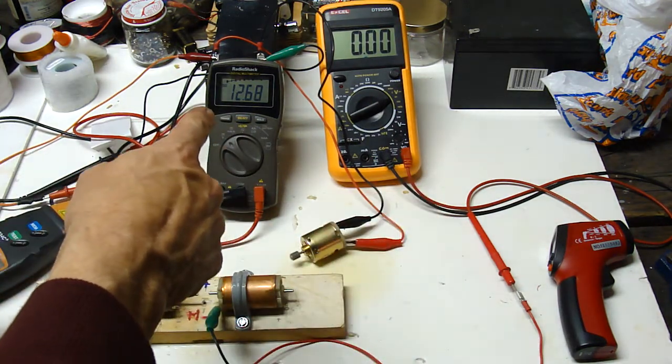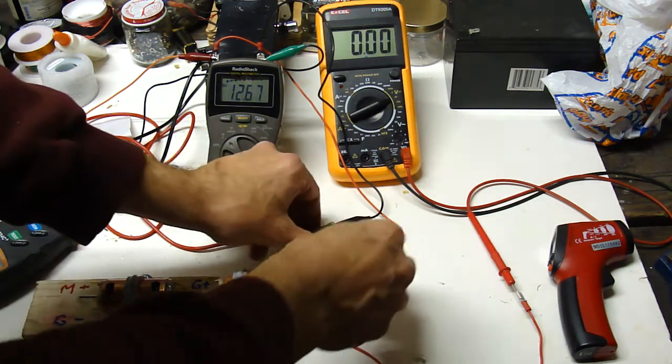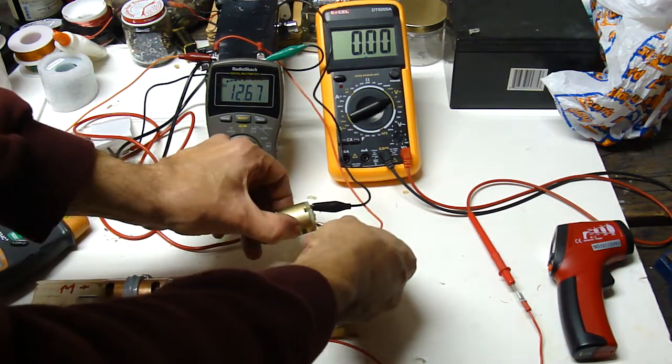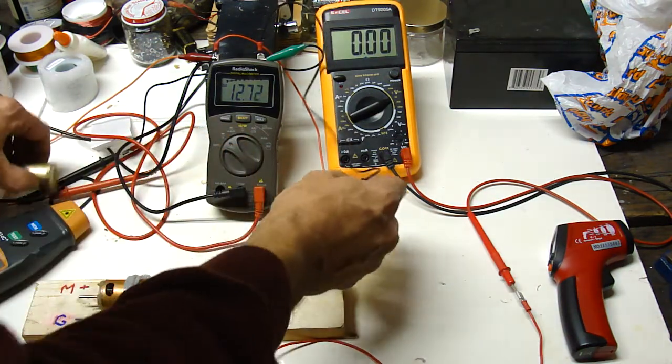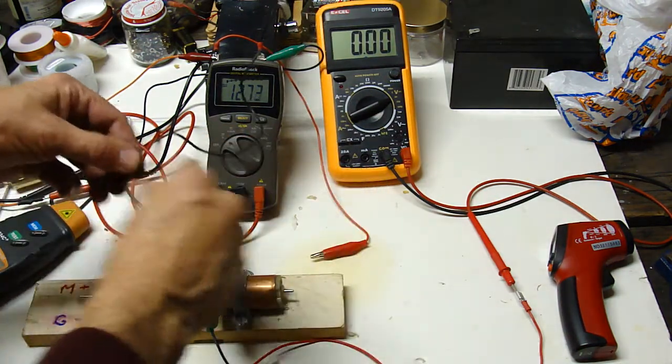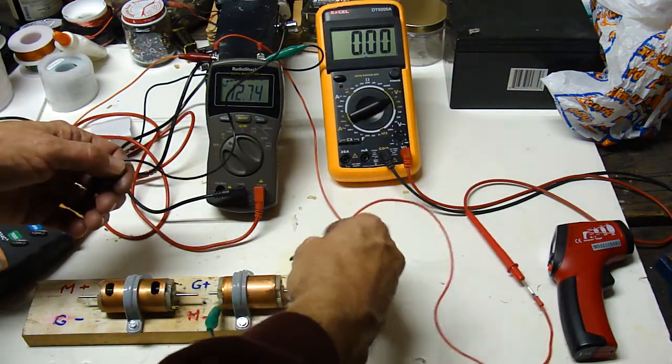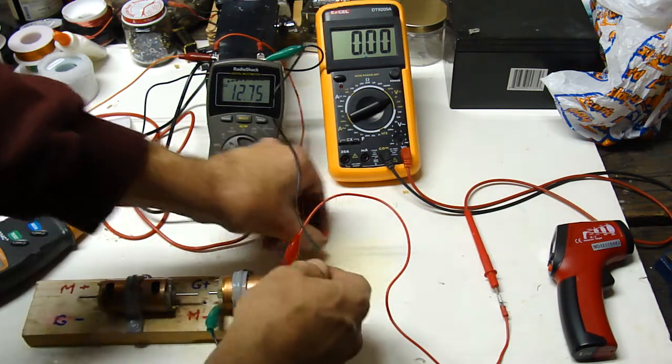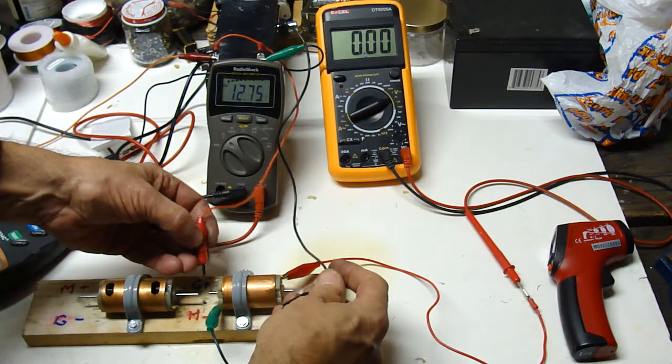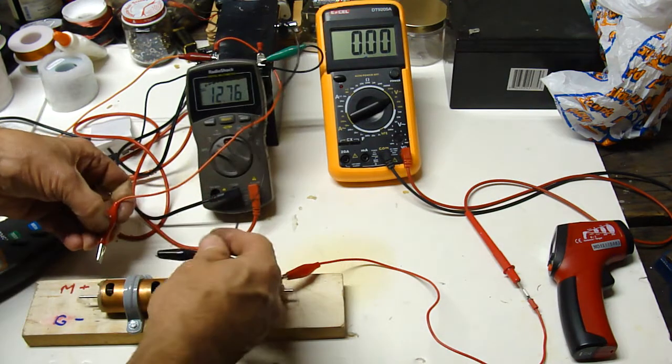And voltage drops just a tenth of a volt or so. I don't have any amp readings I can give you. Okay, let's hook up the generator voltage here. Let's do this motor first.